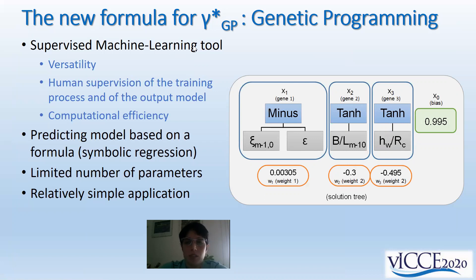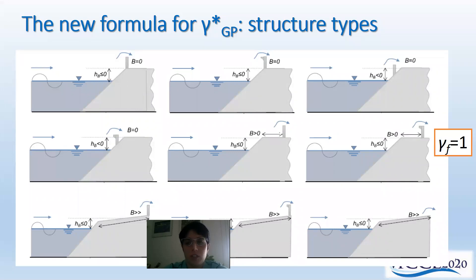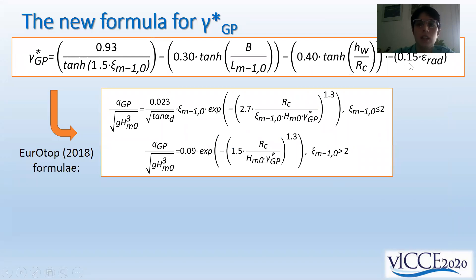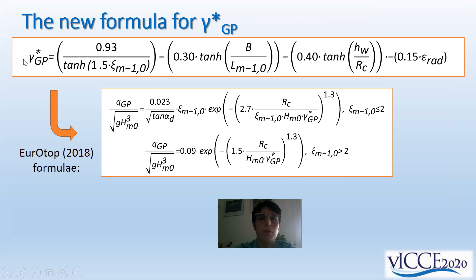Starting from this observation and aiming at providing an easier representation of all the different structural elements and different gamma star values — which may be used straightforwardly independently of the combination of structural elements — we adopted the genetic programming technique, which is a machine learning tool, to develop a new formula. The training of the genetic programming was carried out on all structure configurations consisting of the union of the data by van Dorsen and our new conditions, all referring to smooth structures.